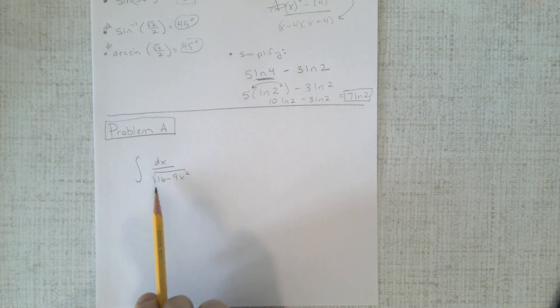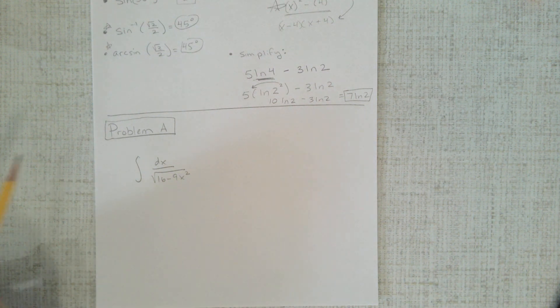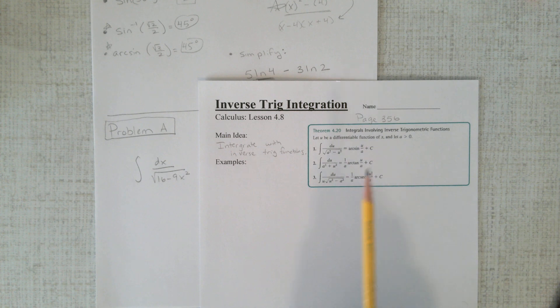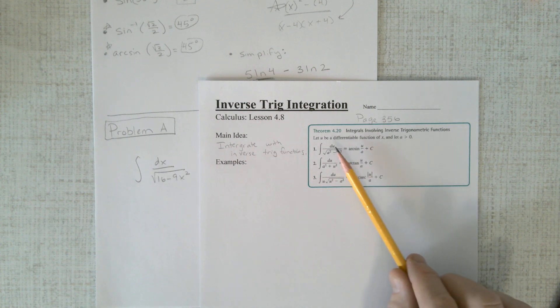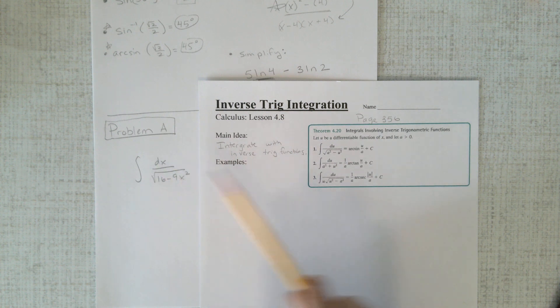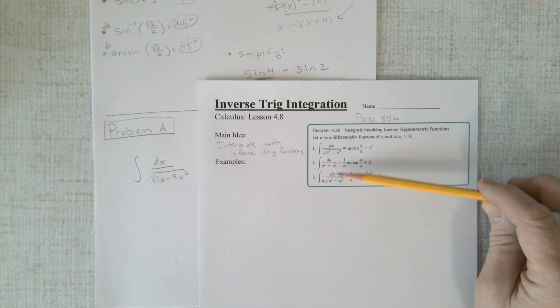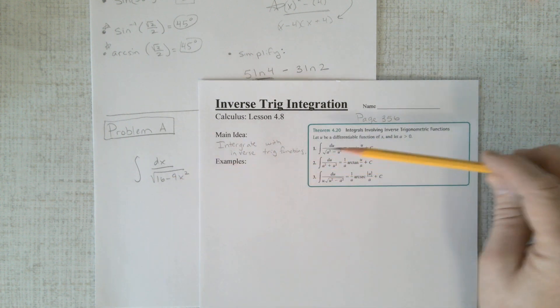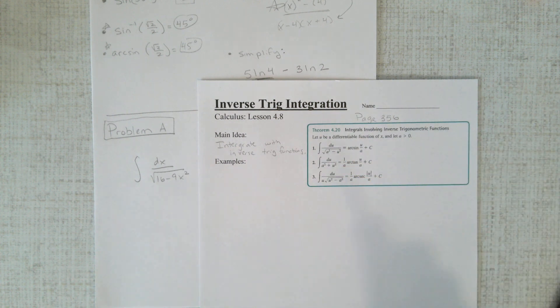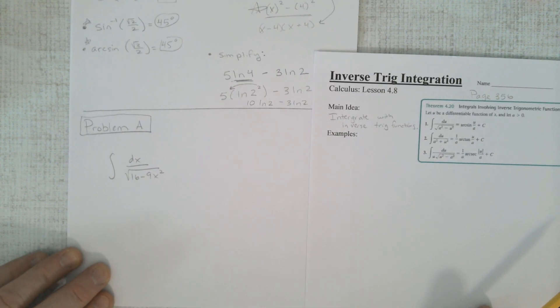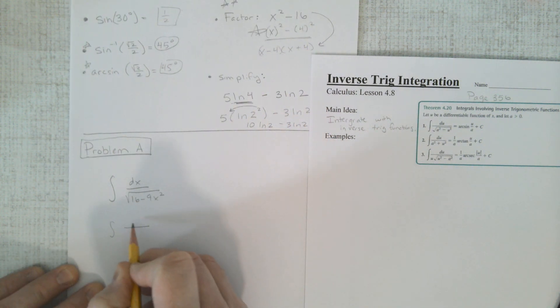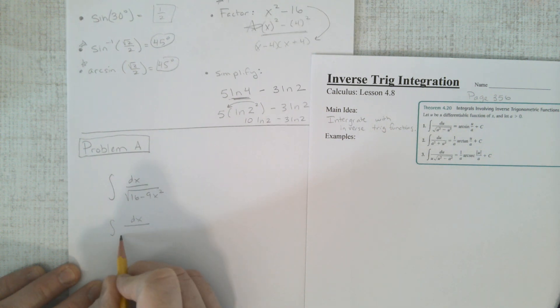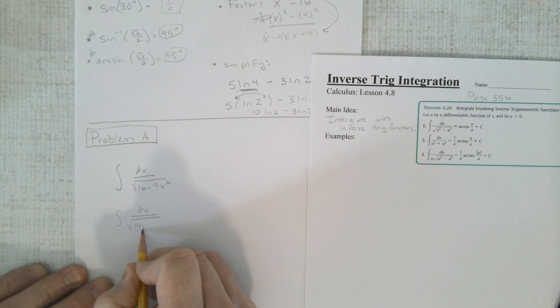We have to integrate this crazy function. And we could try some u substitution, but we have a lot going on here. So what you need to recognize is that this function matches one of these three integrals. And that's all you have today. You have these three integrals. Every problem will match one of these. And if it looks like this, well, it's either going to match this top one, or it could match this bottom one because it has a square root in it. So this integral is going to match one of these after I do some u substitution. So watch the process here.